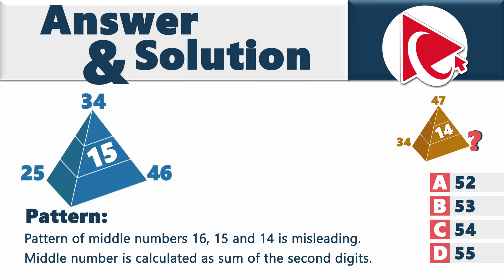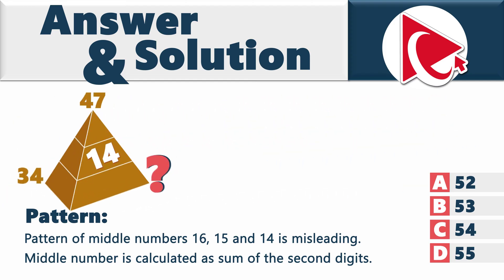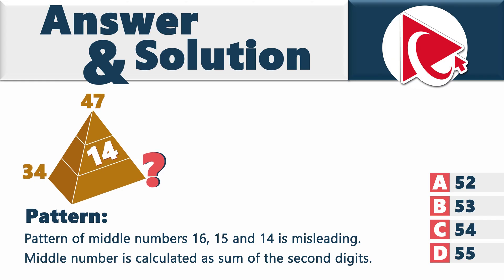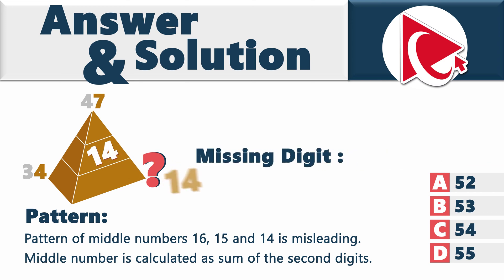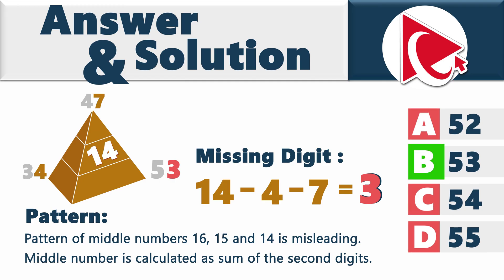In the second pyramid, digits 5, 4, and 6 are used, and 5 plus 4 plus 6 equals 15. For the missing number in the third pyramid, we know the final result is 14 and two of the digits used are 4 and 7. So: 14 minus 4 minus 7 equals 3. The calculated digit is 3, meaning the missing number is choice B, 53.